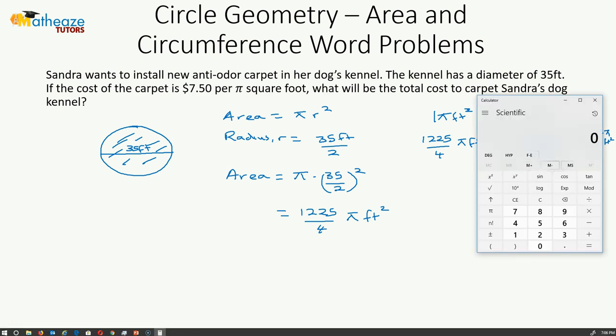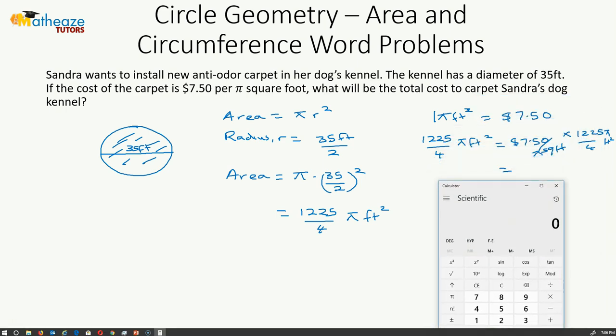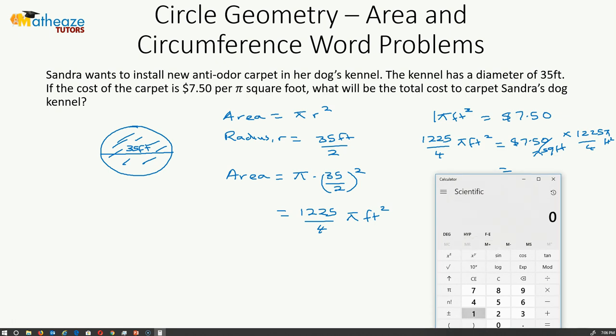Let's multiply this through. We have 1,225 divided by 4 times 750. So we have 2,296.88.